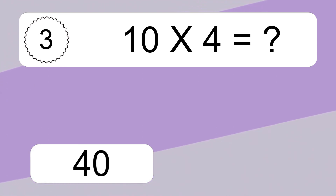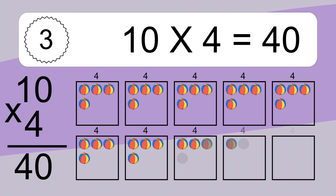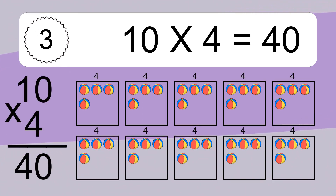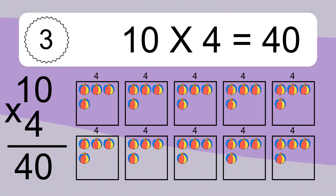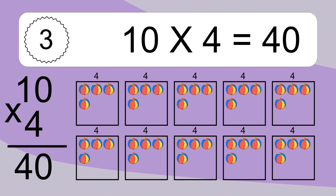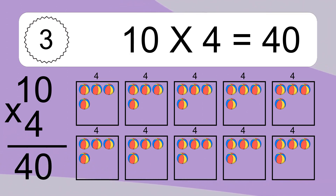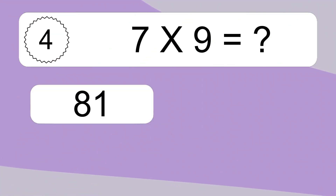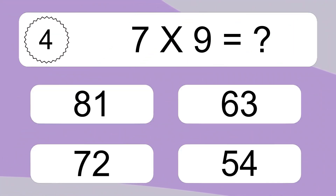10 times 4 equals what? 10 times 4 equals 40. We have 10 boxes, and each box has 4 colorful balls inside. If you count all the balls in all the boxes together, you will have 10 times 4 balls. This equals 40 balls.